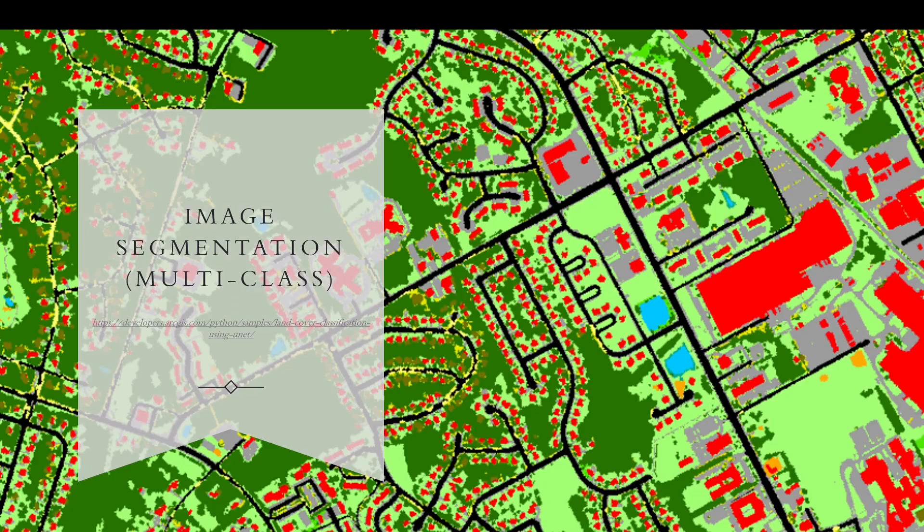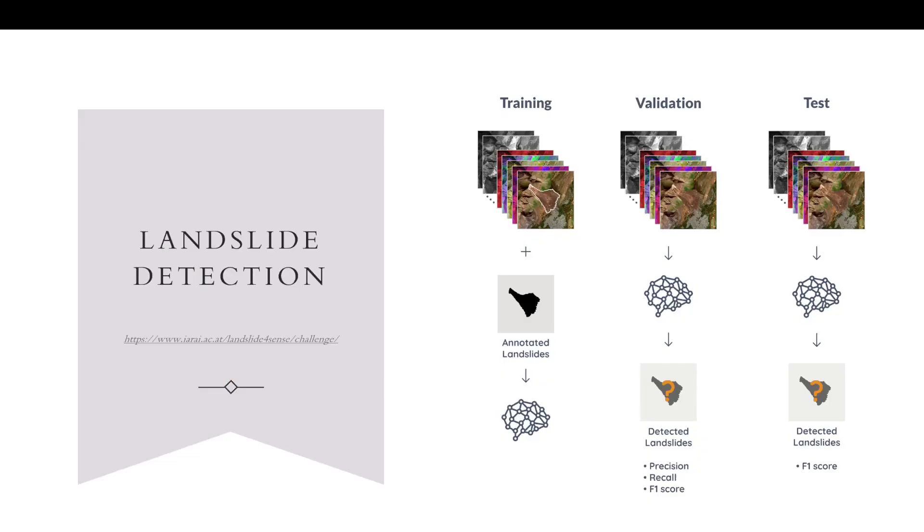Also, another task will be land use land cover mapping. It's an image segmentation task. We can see it's a multi-class task. We are going to classify our satellite imagery labels into four different categories: settlement, agriculture, forest, and many more classes. We are simply going to do multi-class segmentation.